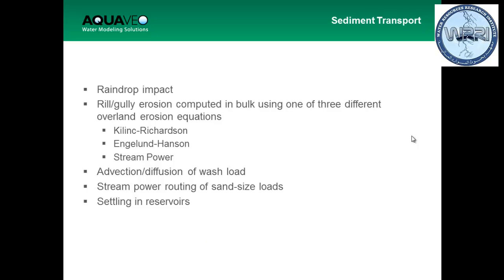For sediment transport, these are some of the parameters you need to enter for all of these processes. Things that cause sediment transport are raindrop impact and something called rill and gully erosion, computed in bulk using one of three different methods. You also have advection and diffusion of your wash load — your wash load is the light materials, so your sediment materials like clay and silt in your water.